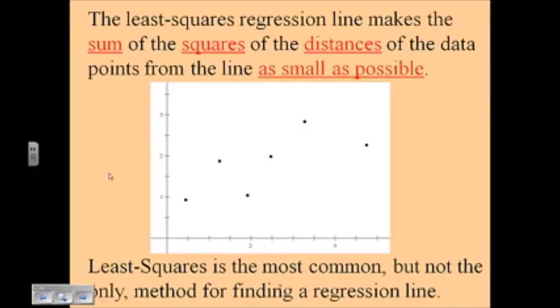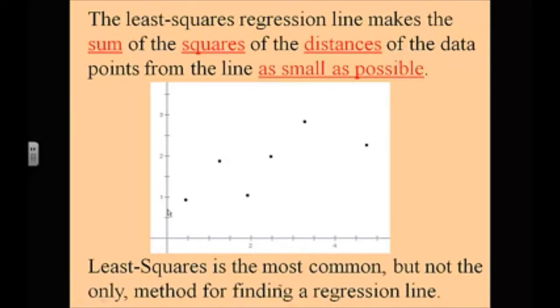The least squares regression line makes the sum of the squares of the distances of the data points from the line as small as possible. So if you were to try and draw, the goal is to draw the straightest line possible that goes right through the center of the data. And the goal is to try and make the squares. So the distance, that point's right on the line, this point slightly off the line, that's the deviation. And if you were to square that, you would take that deviation squared.